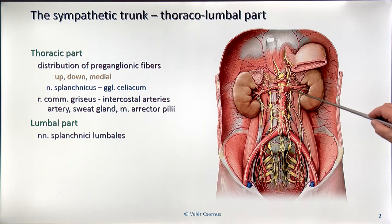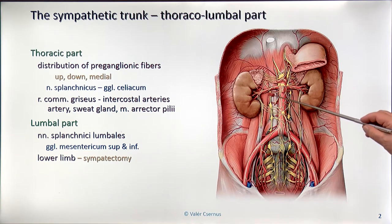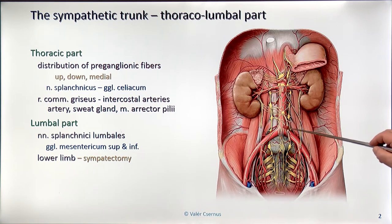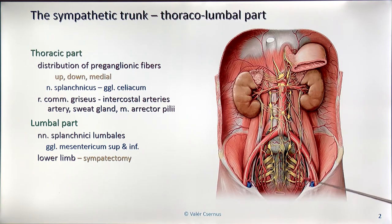These lumbar splanchnic fibers will feed the superior and inferior mesenteric ganglia. The post-ganglionic fibers of the lumbar part — equivalent to the ramus communicans griseus in the thoracic part — mostly join the nearby aorta. In the wall of the aorta they form a rich network that continues along all the branch system of the abdominal aorta. This is why they control the blood supply of the lower part of the body, especially the lower limb.